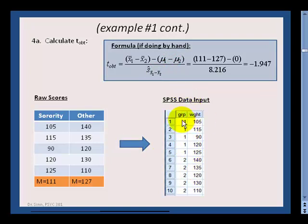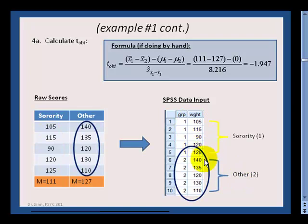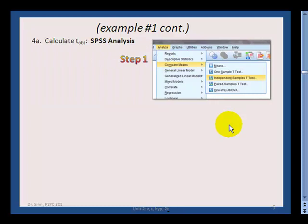To set it up in SPSS, we use two columns. The first column indicates which group we're dealing with — sorority is labeled one at the top, non-sorority is labeled two below — and the second column contains the actual weights. This is something that can trip people up: you don't just put data in two columns; you indicate the group in column one and the weight in column two. Each line is for a separate person because these aren't the same people.